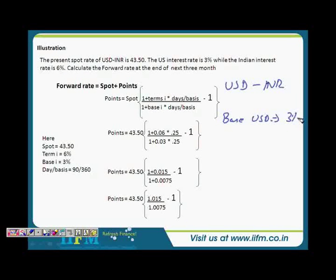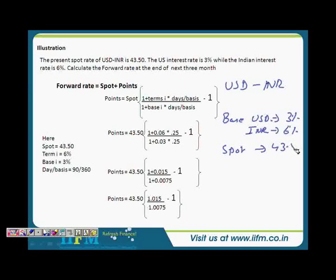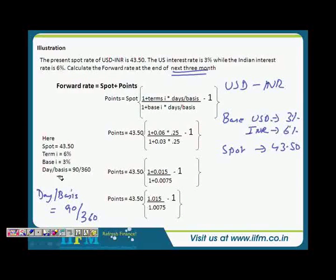Our base currency is USD with interest rate at 3%, and term currency is INR with interest rate at 6%. The prevalent spot rate is 43.50. We have to calculate the forward rate at the end of the next 3 months. Our day basis will be 3 months or 90 days divided by 360, because we take basis as 360 always. This is the market convention.